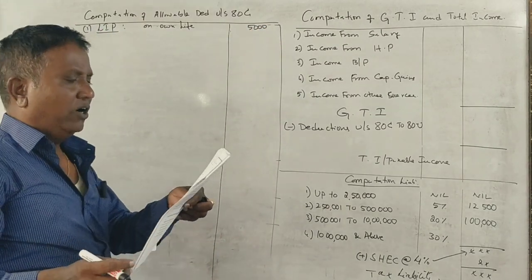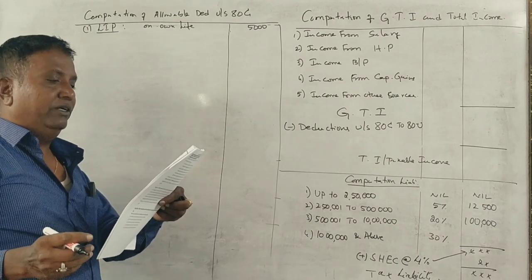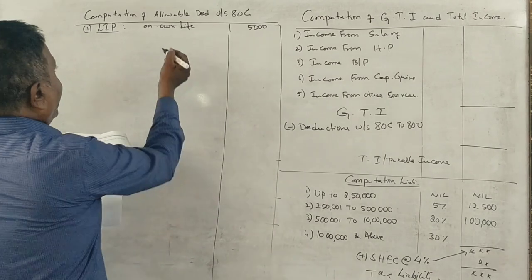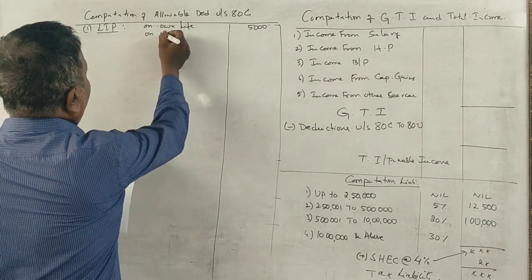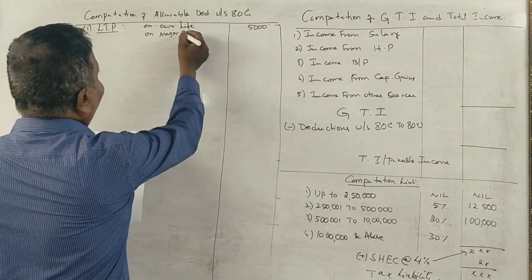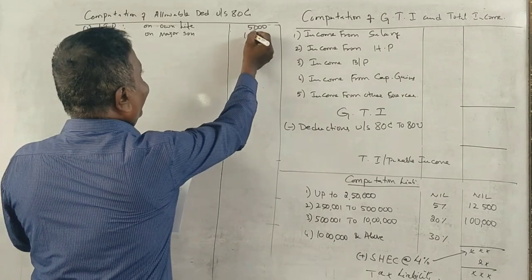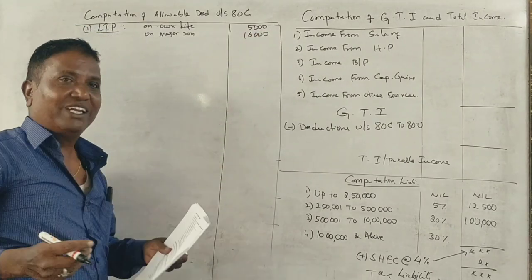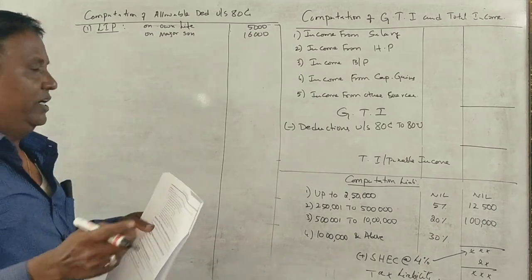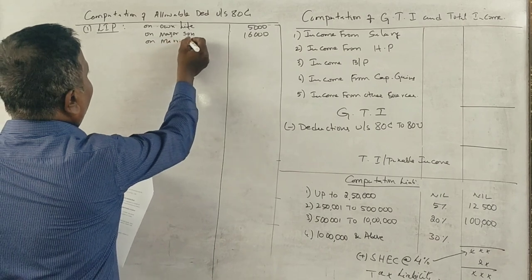Next, premium paid 16,000 on life insurance policy of his major son's life. That premium qualifies. Next point: premium paid 1,000 on life insurance policy of his married daughter.